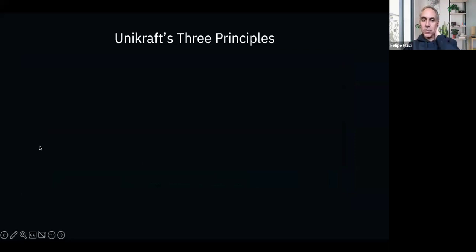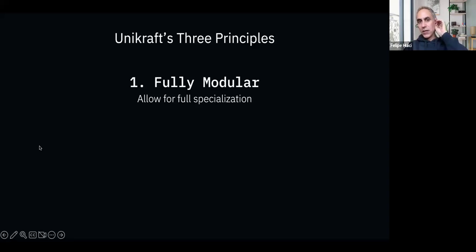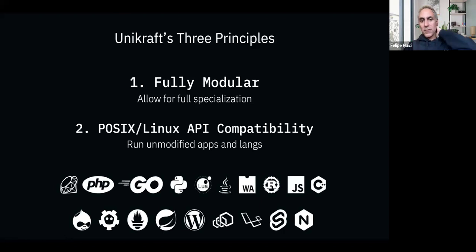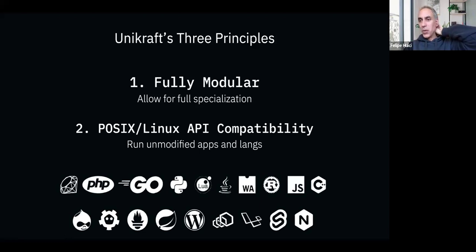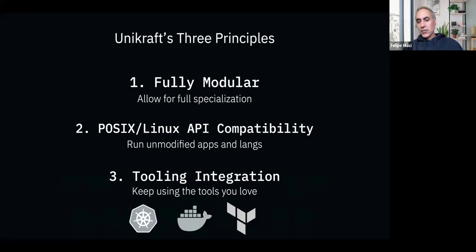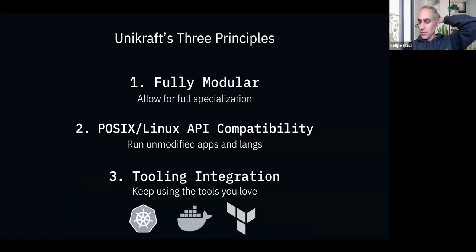Unikraft has three principles. First, it's fully modular — not a monolithic OS — to allow for specialization. Second, we maintain POSIX and Linux API compatibility, so unlike many projects we don't require modifications to applications or languages; at most we set some config parameters. Third, we do tooling integration with Docker, Kubernetes, and Terraform.